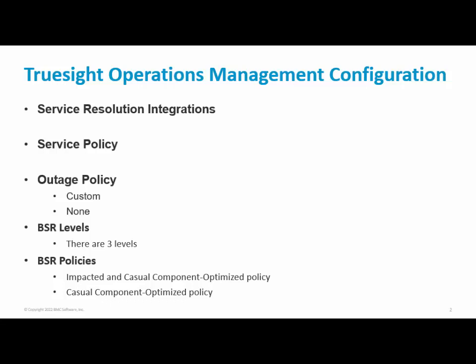Base R Policy has two policies: Impact and Causal Component Optimized Policy, and Causal Component Optimized Policy. Under Impact and Causal Component Optimized Policy, it enables causal incident with causal CI and event information. Under Causal Component Optimized Policy, incident management leverages the CI-based routing rule and populates the CI field for the causal incident and associated resolution protocol categories field.